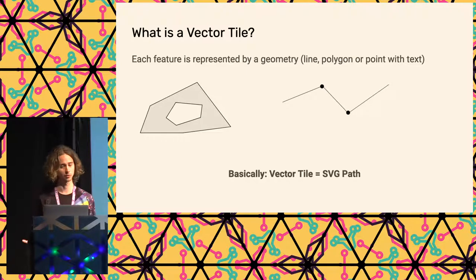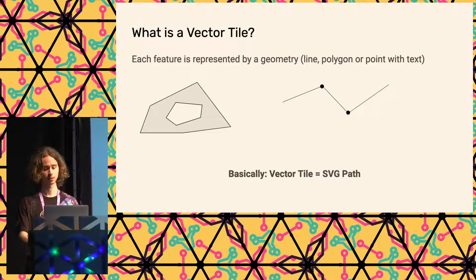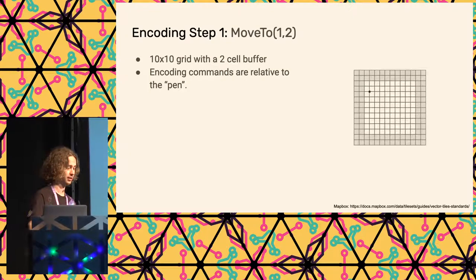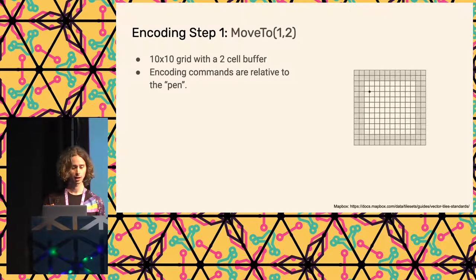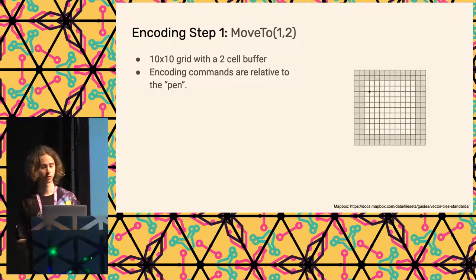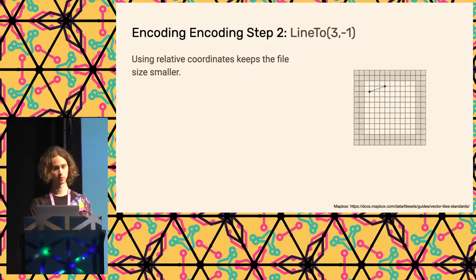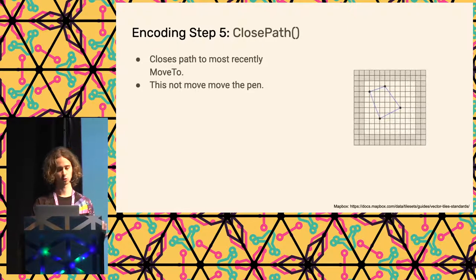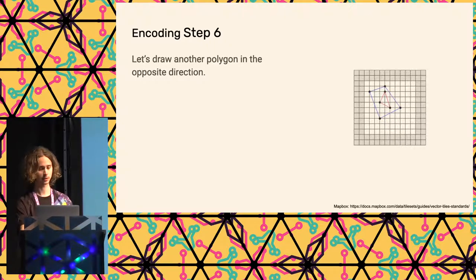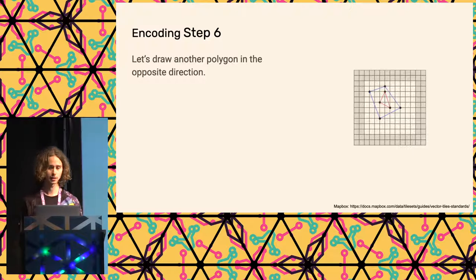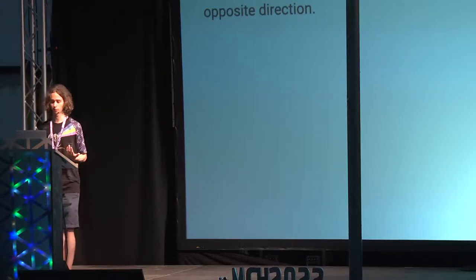Each vector tile is basically just an SVG — there are polygons, lines, and polygons with holes, and that's basically what a vector tile is. We can think about this as having a pen and drawing each tile by moving our pen. For example, initially we move our pen to coordinates 1 and 2, and then we start drawing relatively to the previous location, so that way we can draw a polygon. By doing the same in the opposite direction, we can cut a hole into polygons. That's basically what a vector tile is — it's a whole bunch of SVGs layered on top of each other, with some text and further information for each feature.